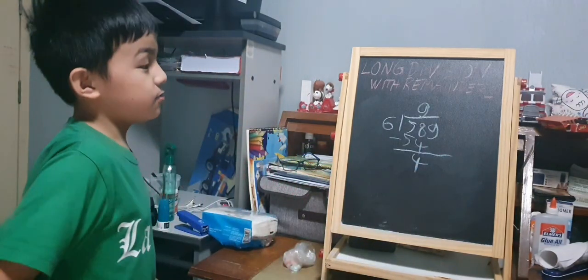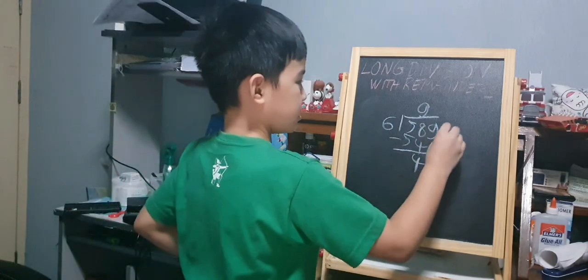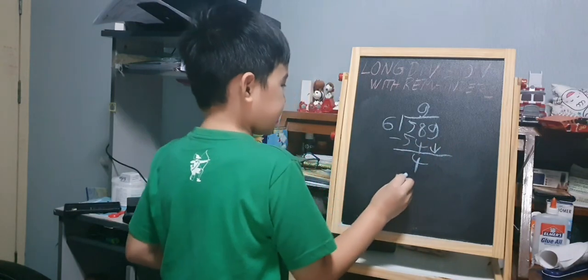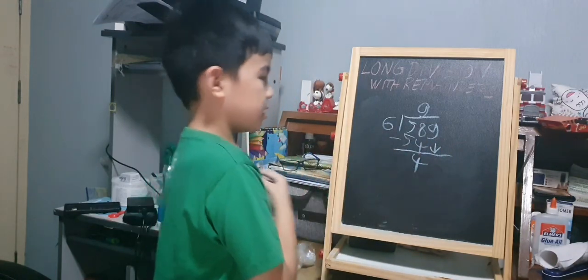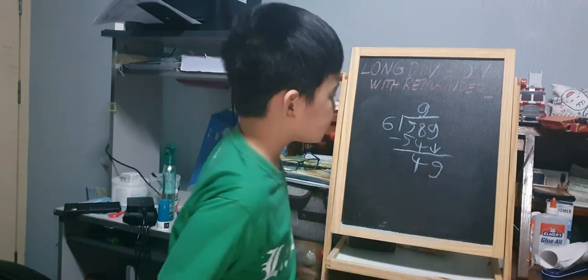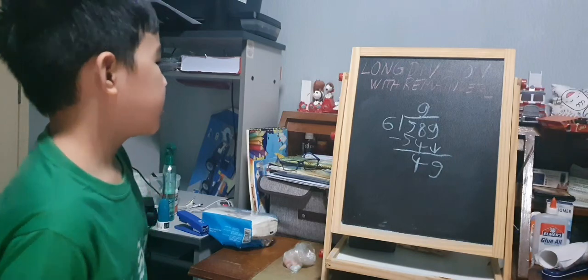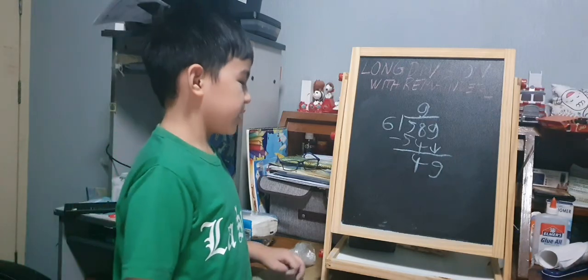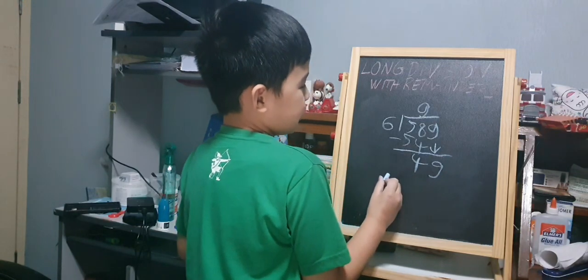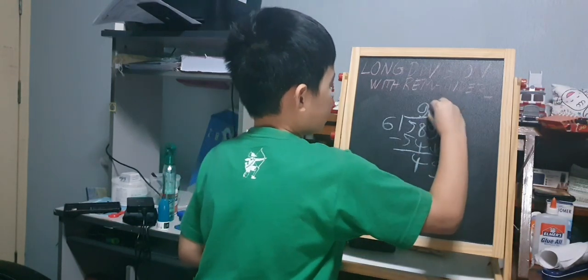The next step is to bring down 9, because 4 cannot be divided by 6. So we will put 9 beside 4. And then we divide again. 49 divided by 6 is 8, so we will put 8 over 9.